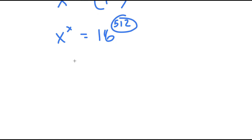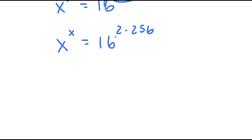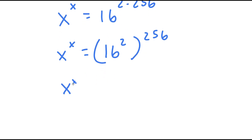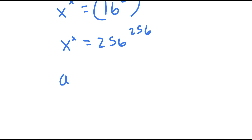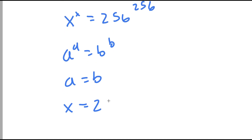Now 512 I can rewrite as 256 times 2, so I have x to the power of x is equal to 16 to the power of 2 times 256. I'm going to do the same thing again, so I have 16 to the power of 2 to the power of 256. And 16 to the power of 2 equals 256, so x to the power of x is equal to 256 to the power of 256. If I have something in the form a to the power of a equals b to the power of b, this means a equals b. So in this case, x is equal to 256.